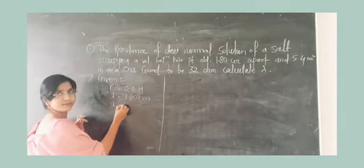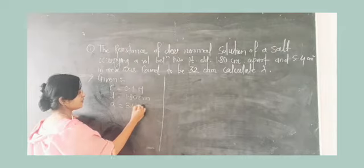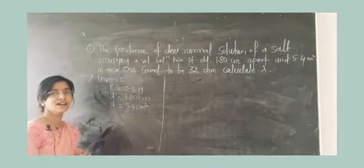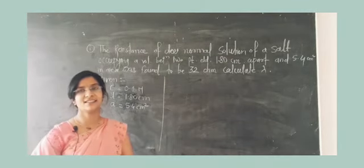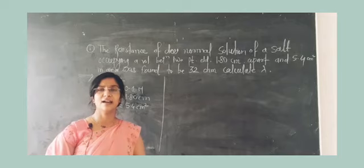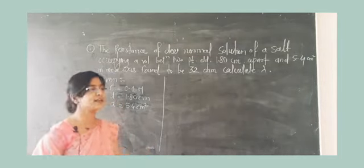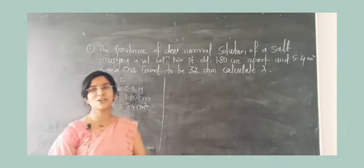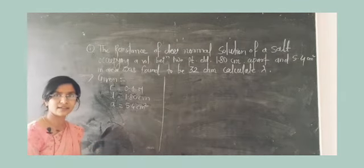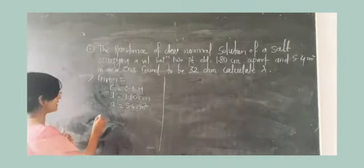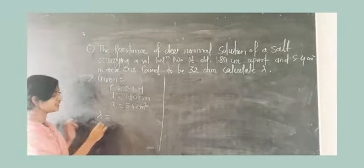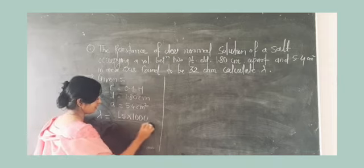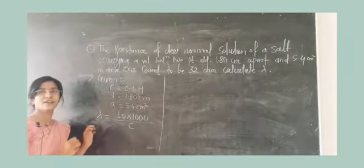Now, the next one is occupying a volume between two platinum electrodes, and that is 1.80 centimeters apart. This means the two electrodes are apart from each other, and the area between two electrodes is also given. Means length and area are given: length is 1.80 centimeters and area is 5.4 centimeters square. So friend, length is given, area is given. What do you remember? Yeah, cell constant. Using this length and area, we are able to find out the cell constant.